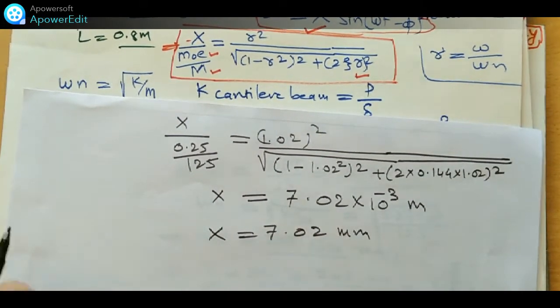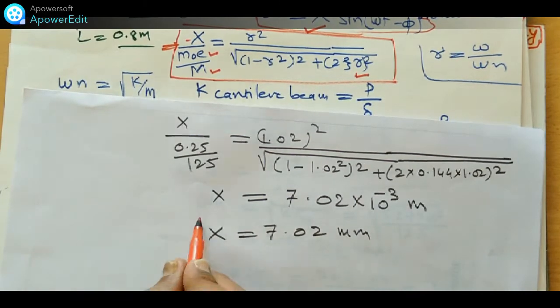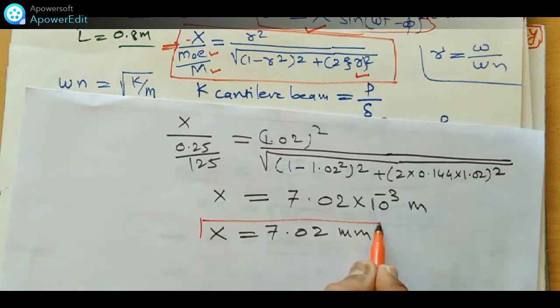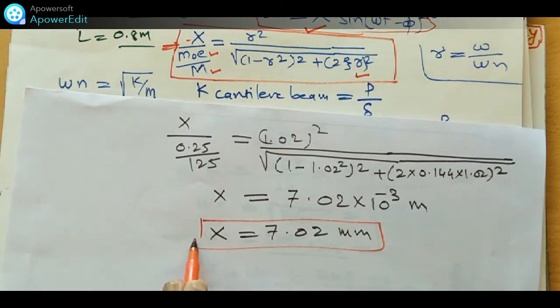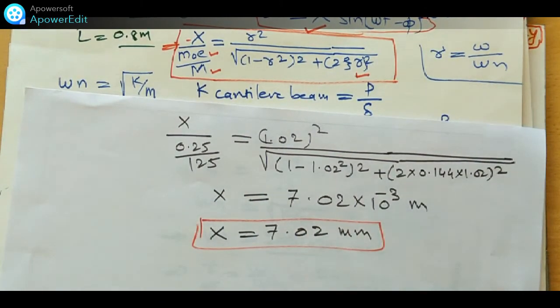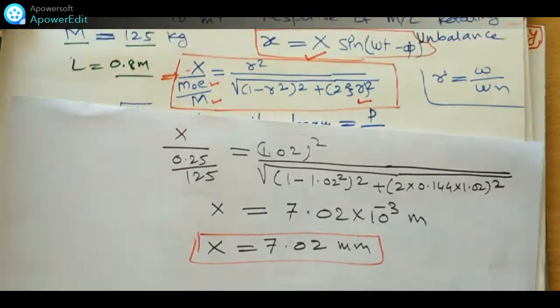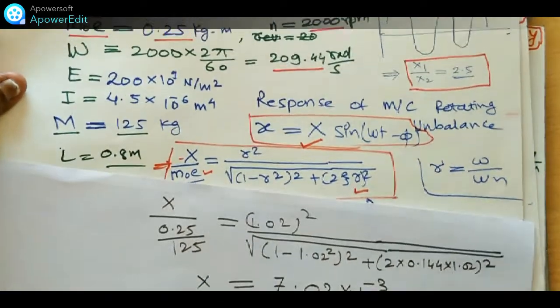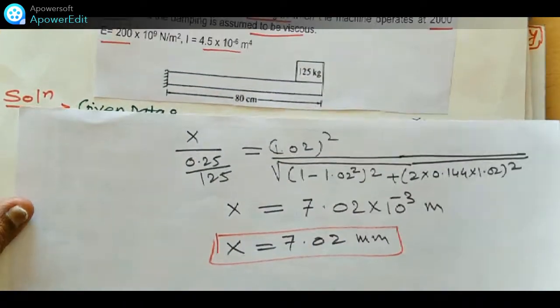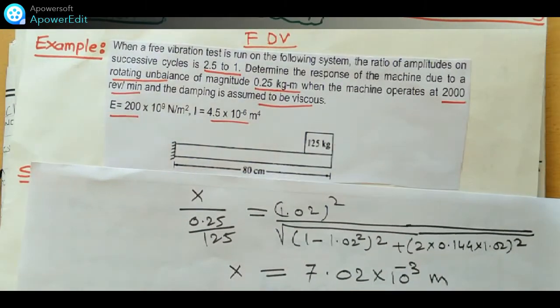This is the response of the system — the amplitude X = 7.02 mm — for the rotating unbalance condition.